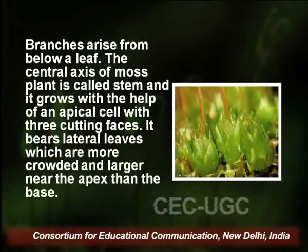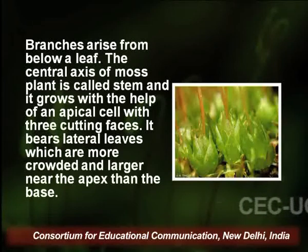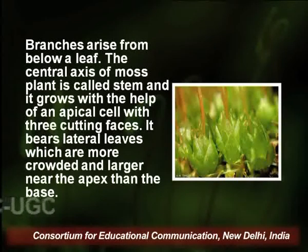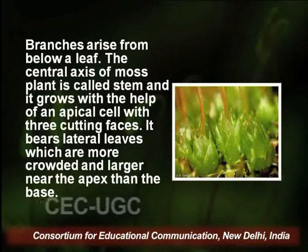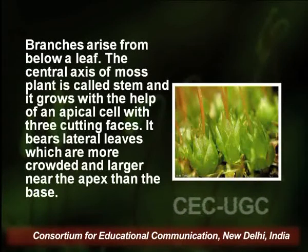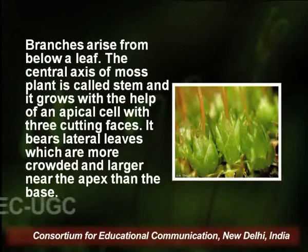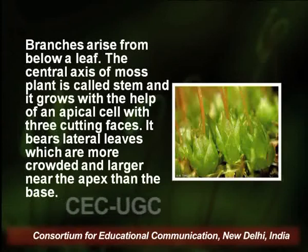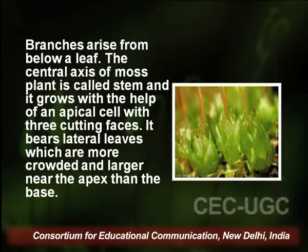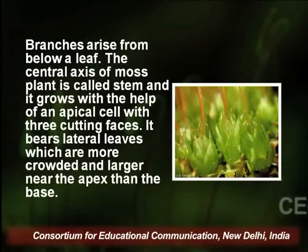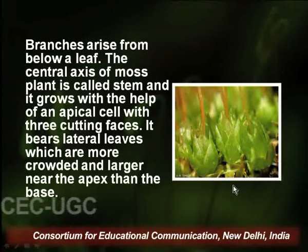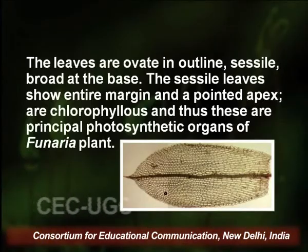Each gametophyte may be unbranched or show monopodial branching; branches arise from below a leaf. The central axis of the moss plant is called the stem, and it grows with the help of an apical cell with three cutting faces. These apical cells are meristematic and divide through three cutting faces to give rise to leaves, stem, and lateral branches. The stem bears lateral leaves which are more crowded and larger near the apex than the base.